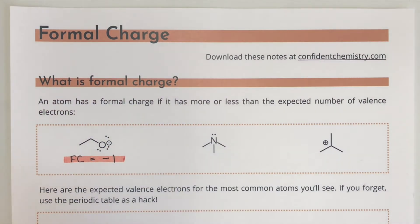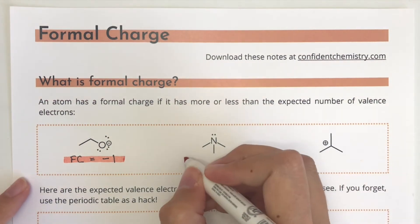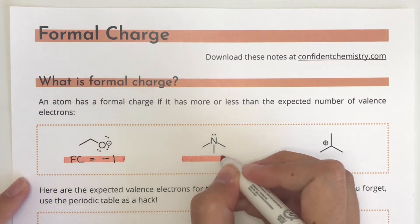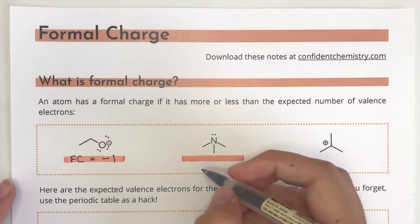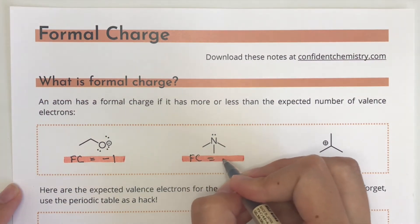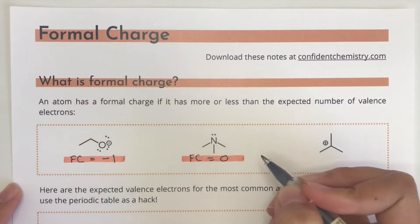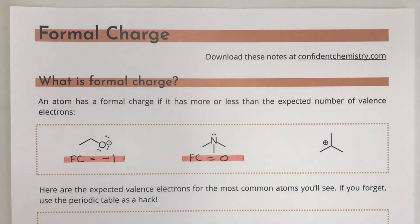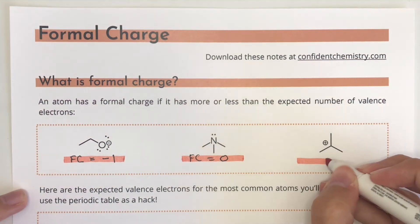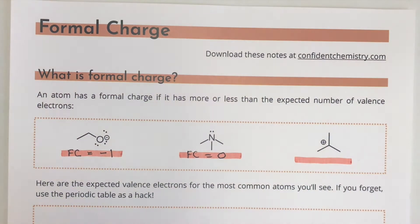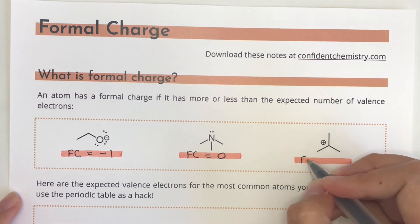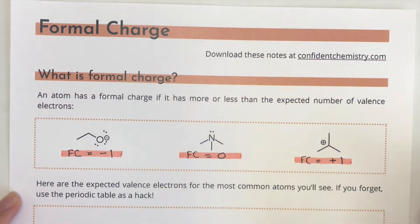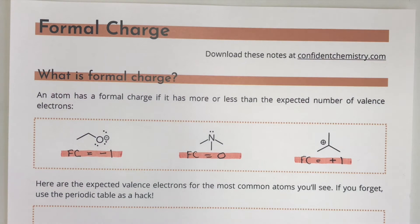It has an extra valence electron compared to a neutral oxygen atom. The central molecule — we don't see any charges indicated, so all of the atoms in this molecule have a formal charge of zero. If we take a look at the hydrocarbon on the right, the plus symbol indicates that the central carbon atom has a formal charge of plus one. It must have one fewer valence electron than a neutral carbon atom.